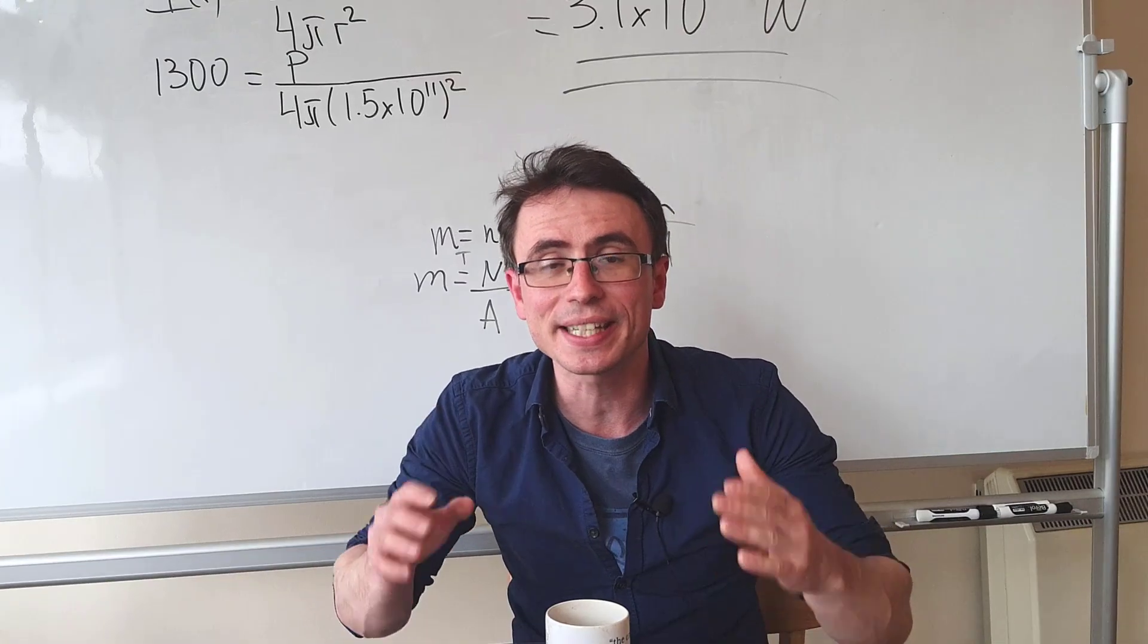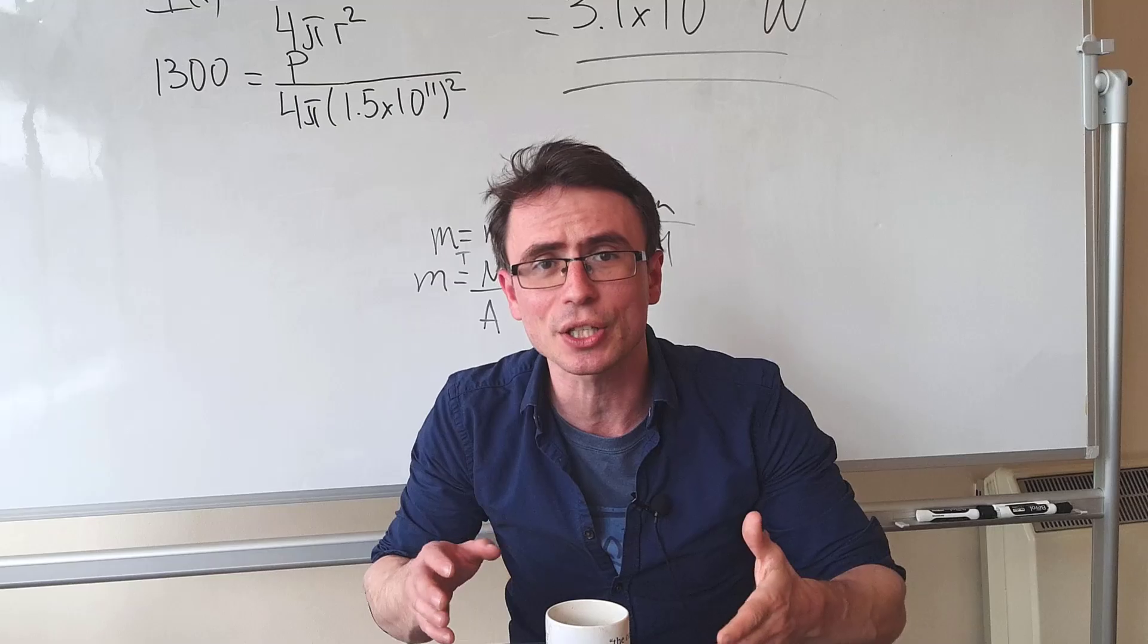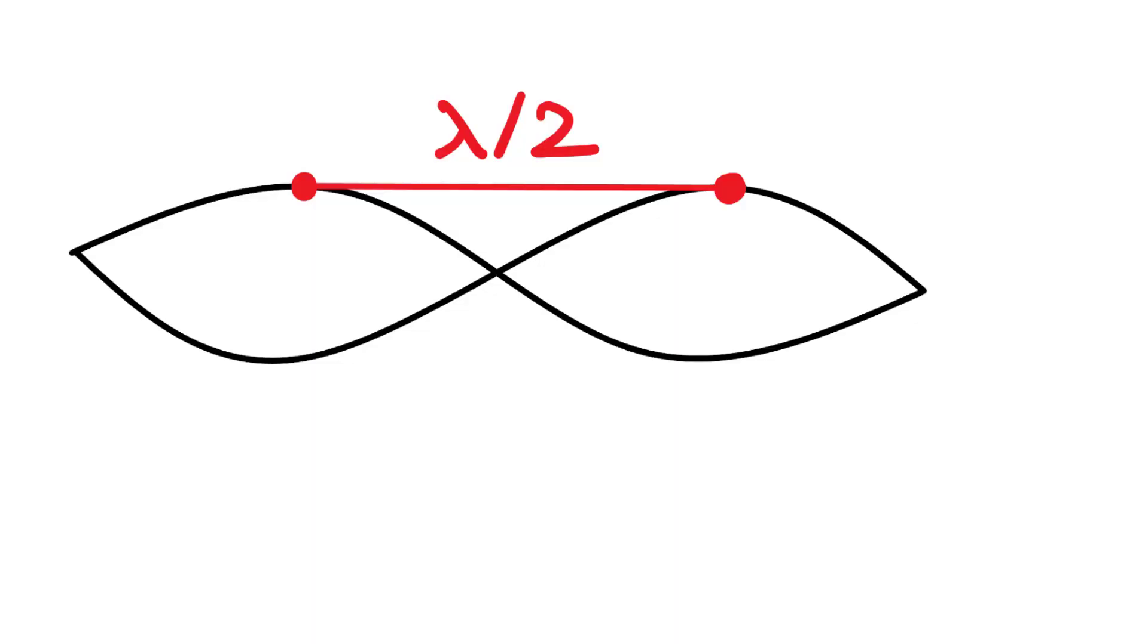If you have a stationary wave, the distance between two adjacent wavelengths and antinodes is equal to half of the wavelength.